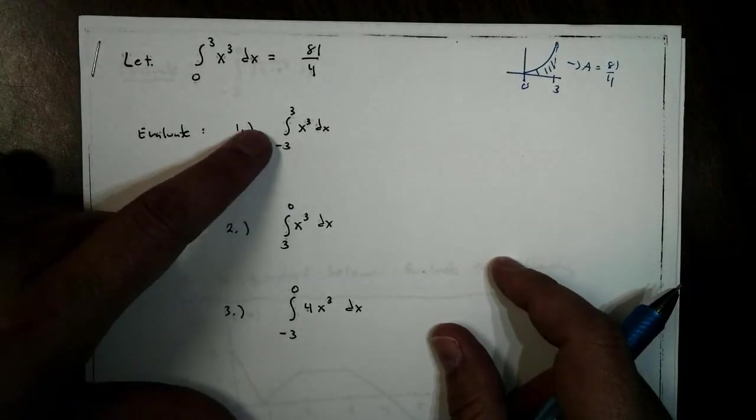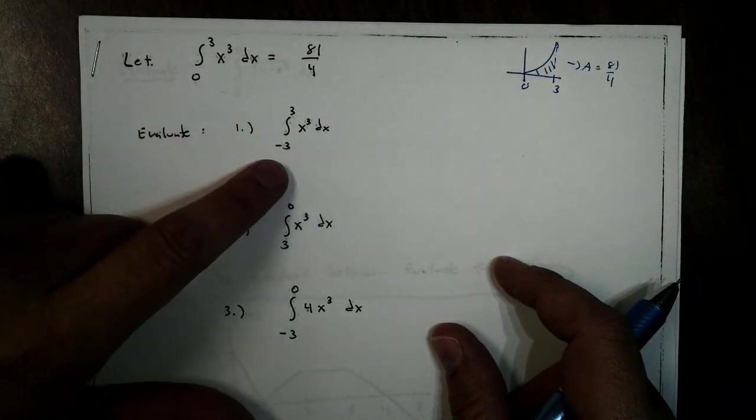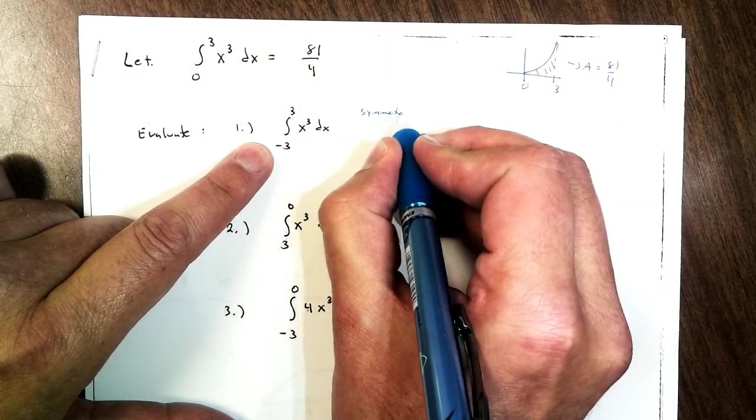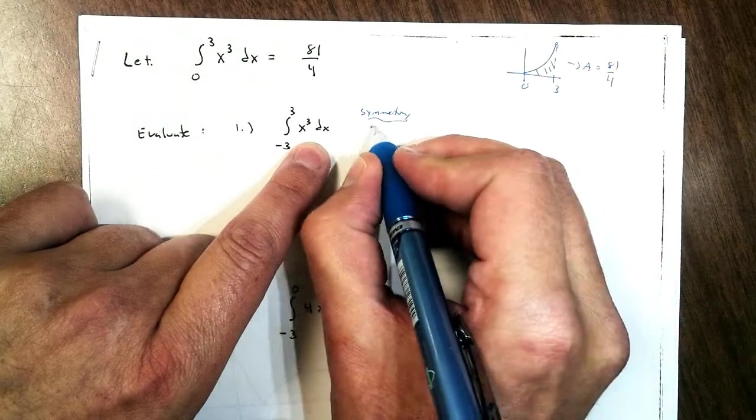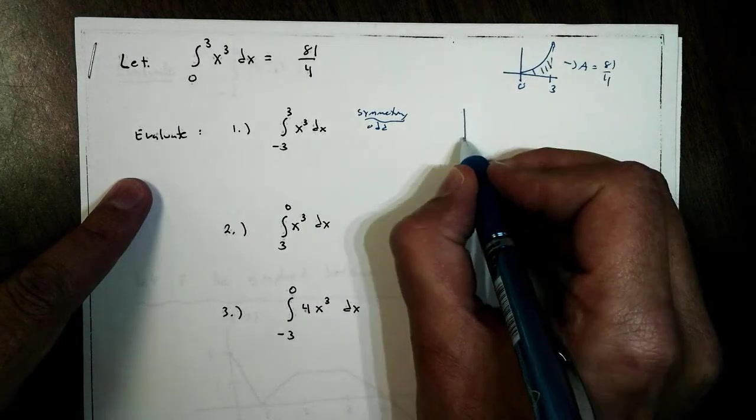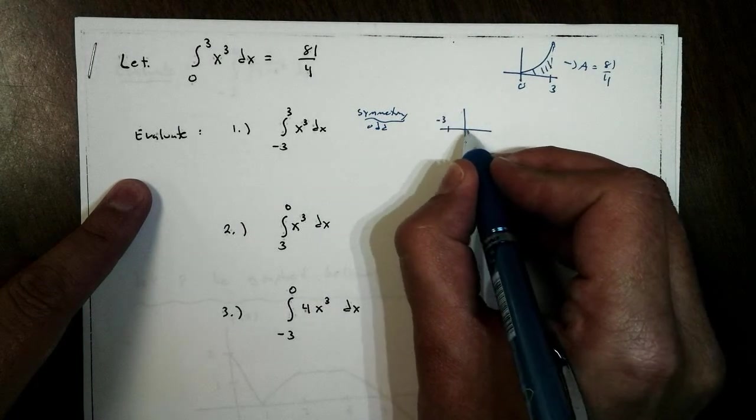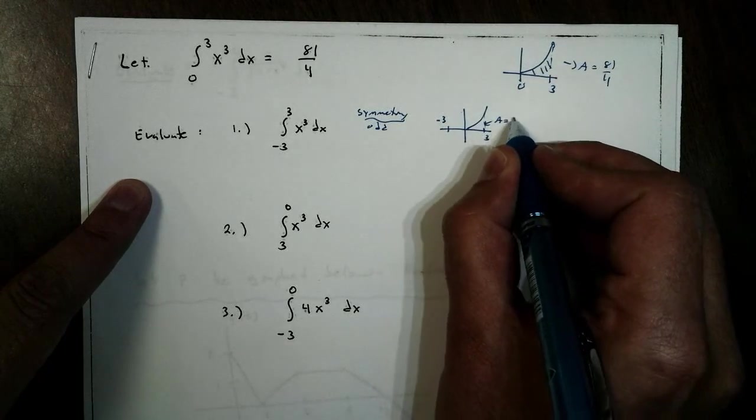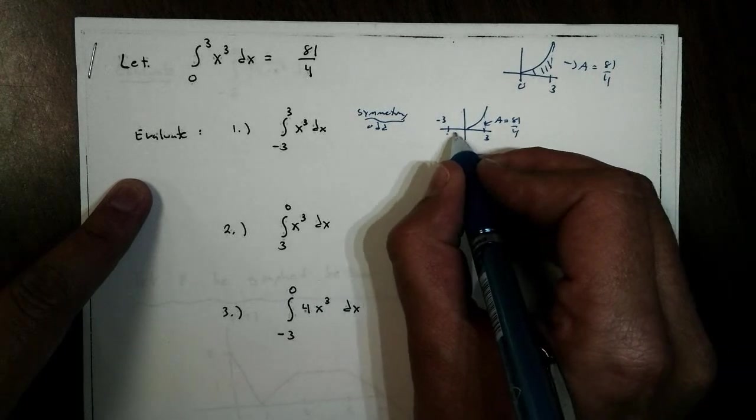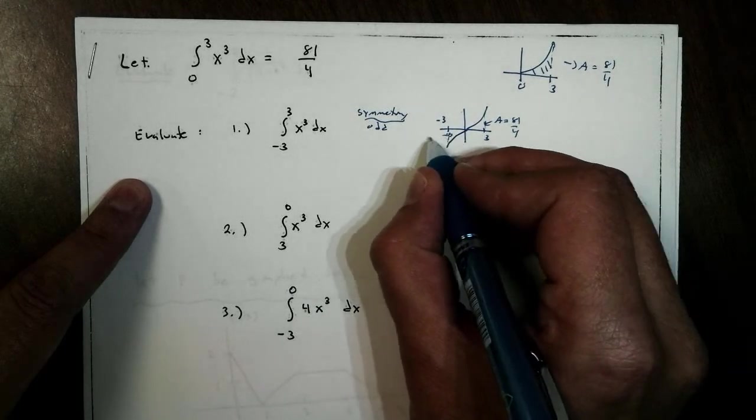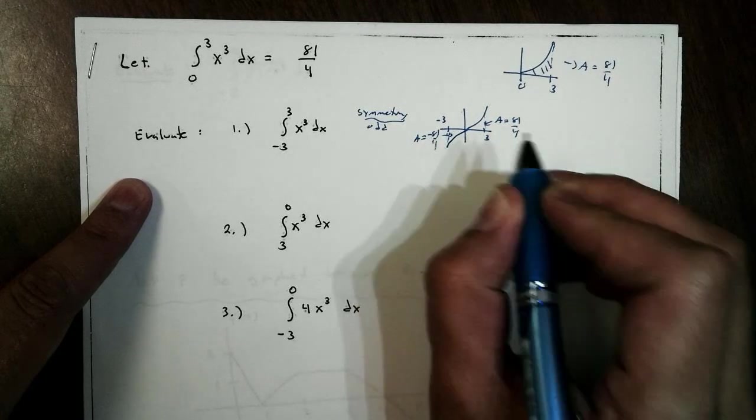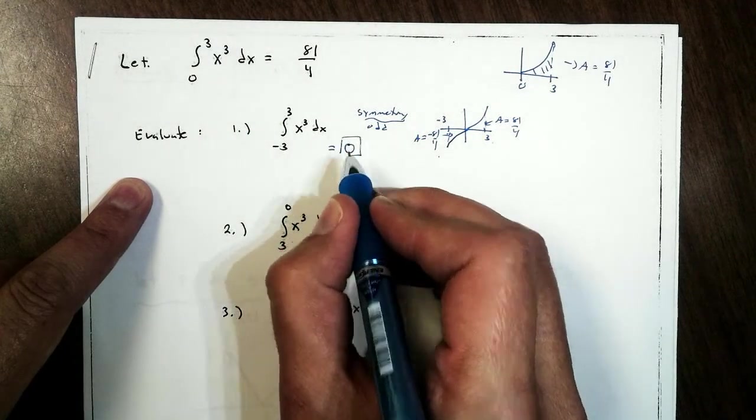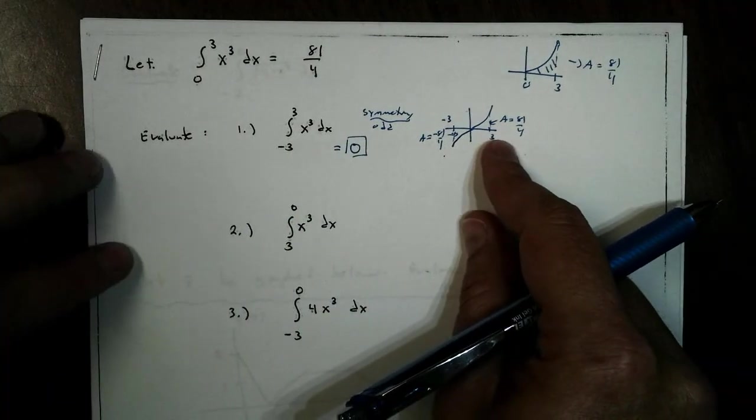For example, what about number 1 right here, where it says how will we find the area from negative 3 to 3? Well, for this we can use symmetry on this one. In this case right here, x cubed is an odd function. This is going to be symmetric about the origin. So from 0 to 3 we know that this area is 81 over 4, but what about from negative 3 to 0? Well that area is negative 81 over 4. So what's going to be the total area? Of course, it's going to be 0.